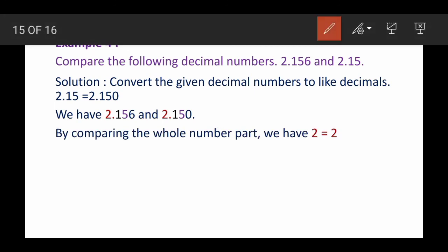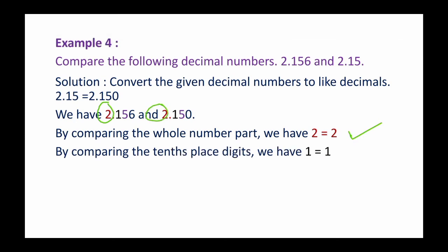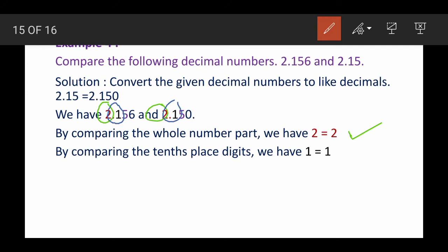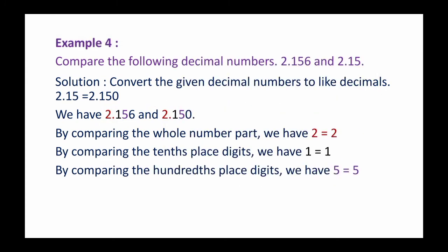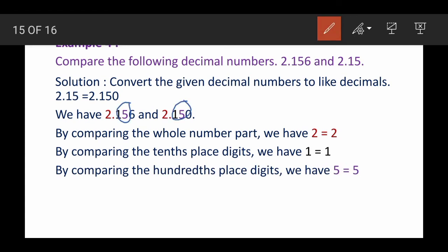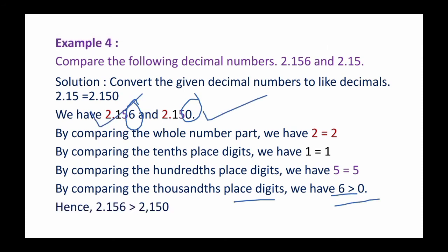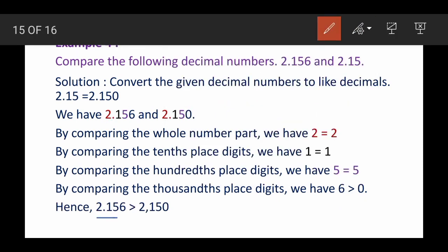Now compare the whole parts: both numbers contain 2, so they are equal. Move to the tenths place: both have 1, so they are equal. Move to the hundredths place: both have 5, so they are equal. Move to the thousandths place: the first number has 6 and the second has 0. Since 6 is greater than 0, the first number is greater. Therefore, 2.156 is greater than 2.150. That's all, thank you.